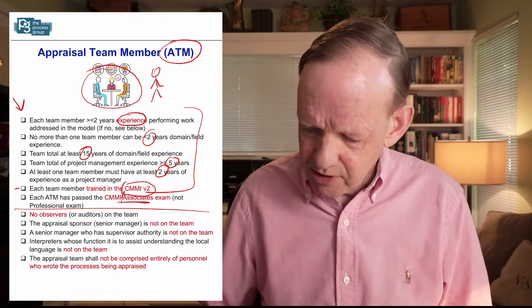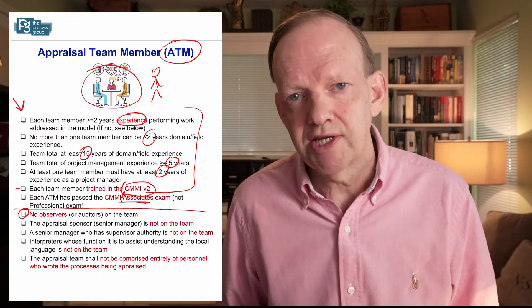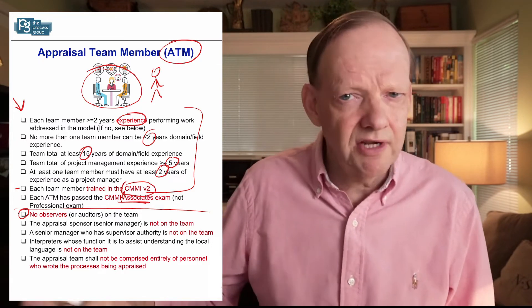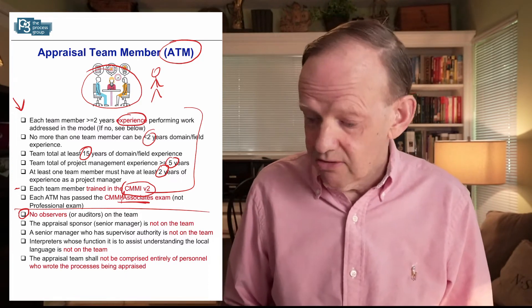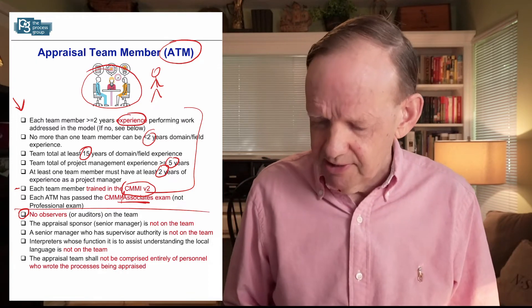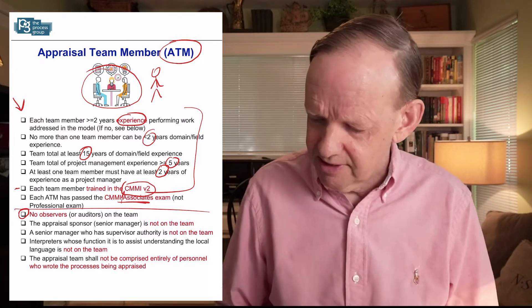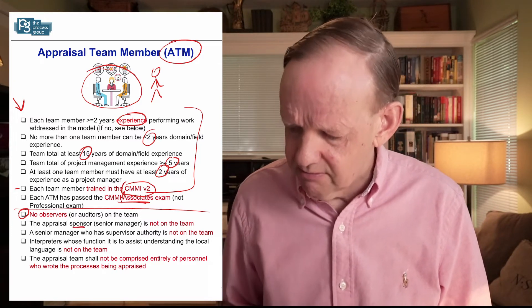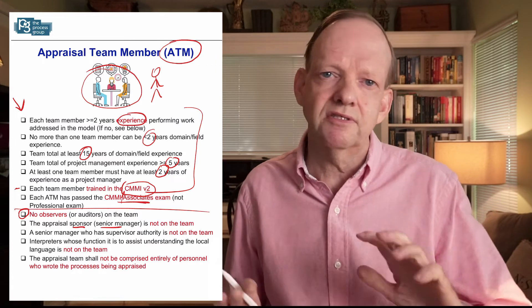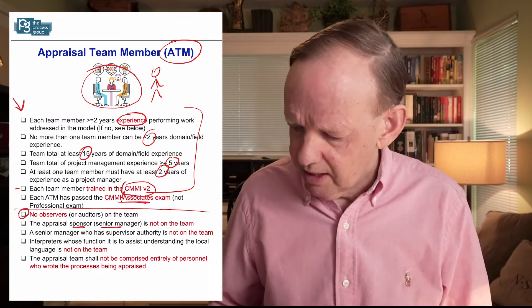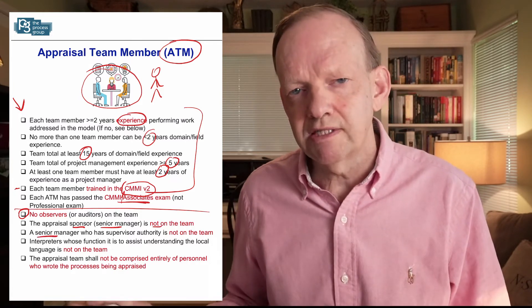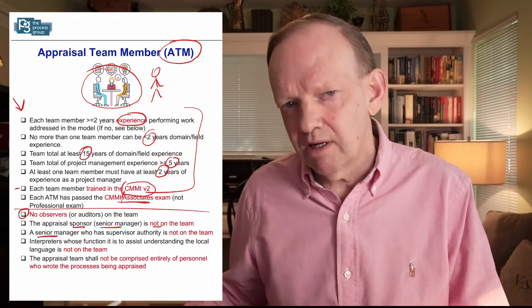There are no observers on the appraisal team. You can't have a CEO observe the appraisal just sitting on the sideline as a fly on the wall — they're either part of the team or they're not. There are no observers reporting back to corporate headquarters. The sponsor — typically the senior manager, VP, director, or CEO of the group being appraised — is not on the team, nor are other managers typically.